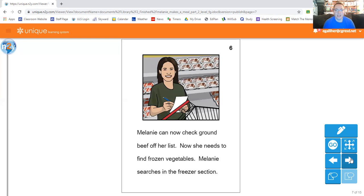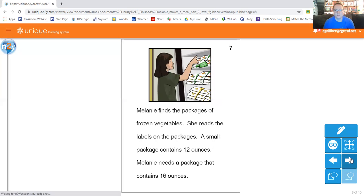Melanie can now check ground beef off her list. Now she needs to find frozen vegetables. Melanie searches in the freezer section. Melanie finds the packages of frozen vegetables. She reads the labels on the packages. A small package contains 16 ounces. A small package contains 12 ounces.